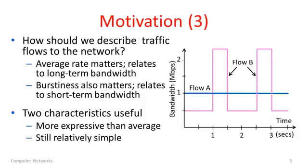So how should we go about describing traffic flows to the network? We'll constrain two parameters. We're going to constrain the average rate because this matters in a long-term sense — it relates to the amount of bandwidth or capacity that's needed in a network.